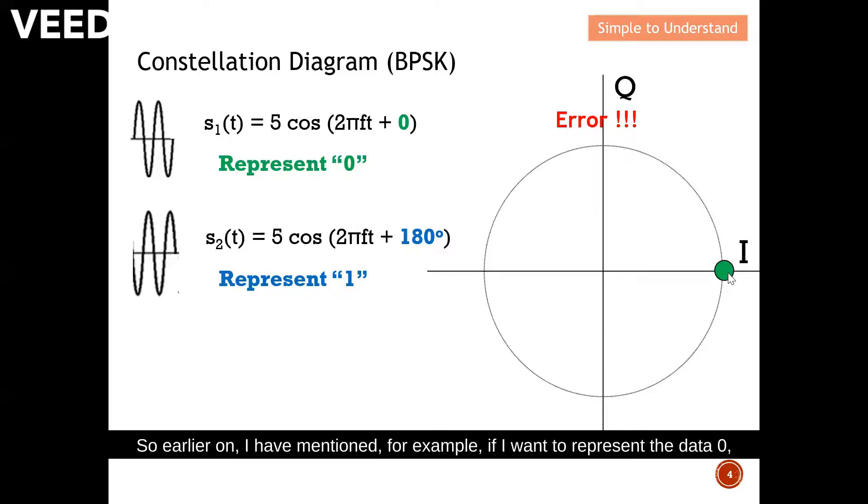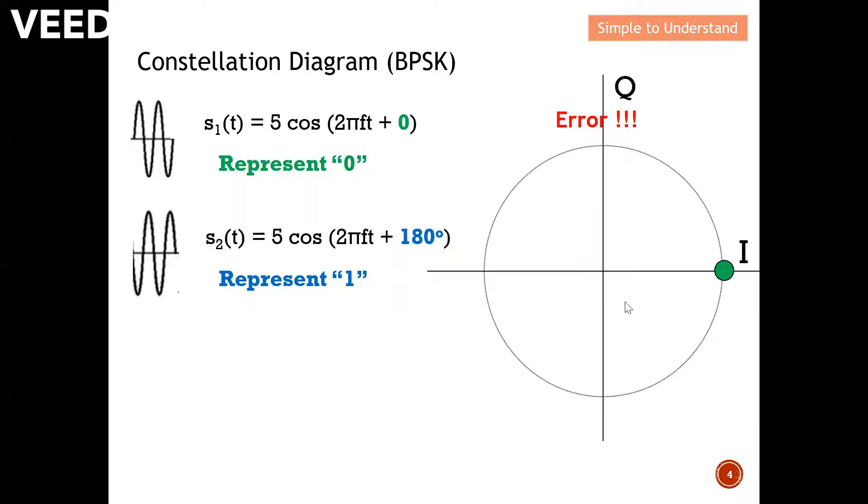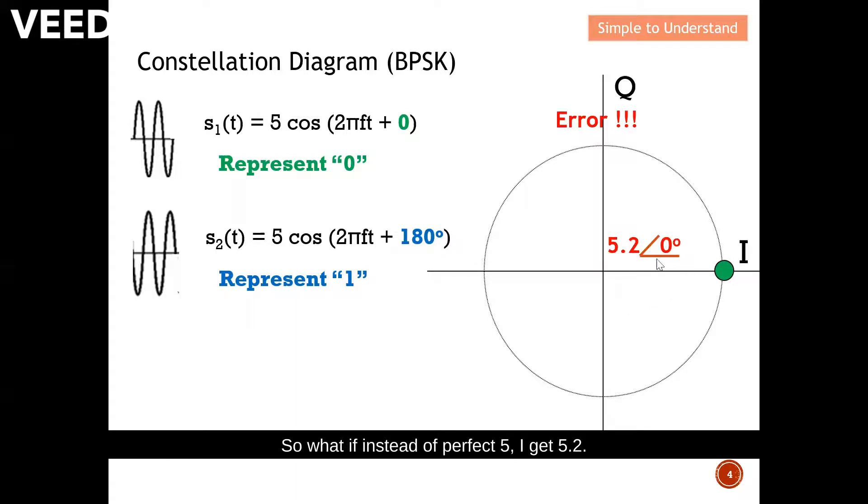So earlier on I have mentioned, for example, if I want to represent the data zero it's supposed to be represented by this green dot here. So what if instead of perfect five, I get 5.2? You know that in the reality world we can't always guarantee that we will be at exactly five. Sometimes we have 5.2, so what happened here is we have an overshoot in terms of magnitude. And also you can imagine it's also possible that we can have a magnitude of 4.8.